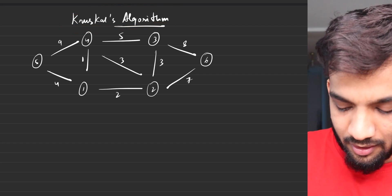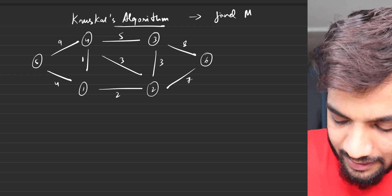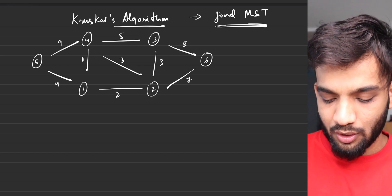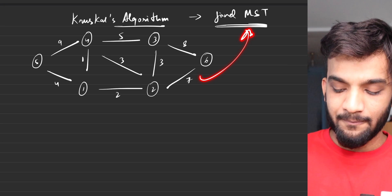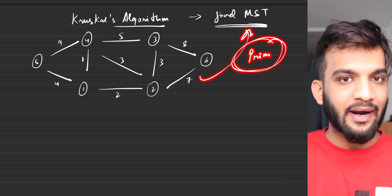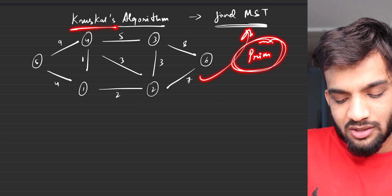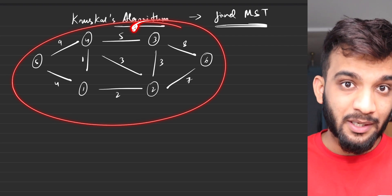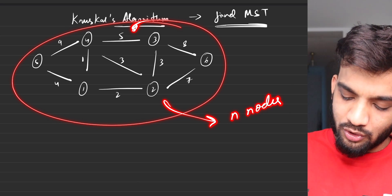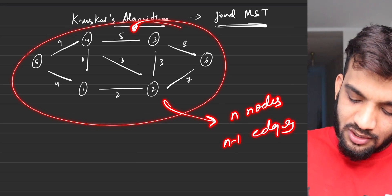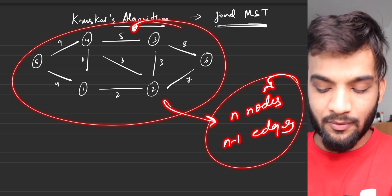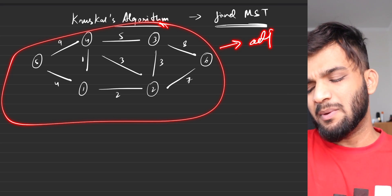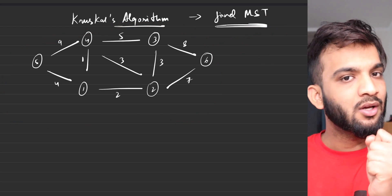Kruskal's algorithm helps us find the minimum spanning tree. We've already discussed what a spanning tree is in previous lectures. This is the given graph and we have to find the minimum spanning tree. We know we can implement Prim's algorithm to find it — we've done that in previous videos — but in this video we'll apply Kruskal's algorithm. The minimum spanning tree represents n nodes and n minus one edges such that you can reach from one node to every other node.